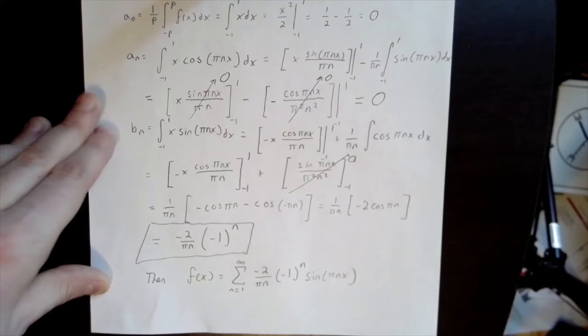We have therefore successfully calculated the Fourier series of the function f of x equals x on the interval from negative 1 to 1. We can write the series as an infinite series of sine terms with the coefficients b_n as we've calculated.